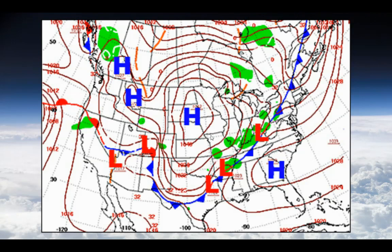Here is a weather map that shows isobars. Isobars connect equal areas of pressure — all of the lines, if you trace around them, would connect equal areas of pressure.